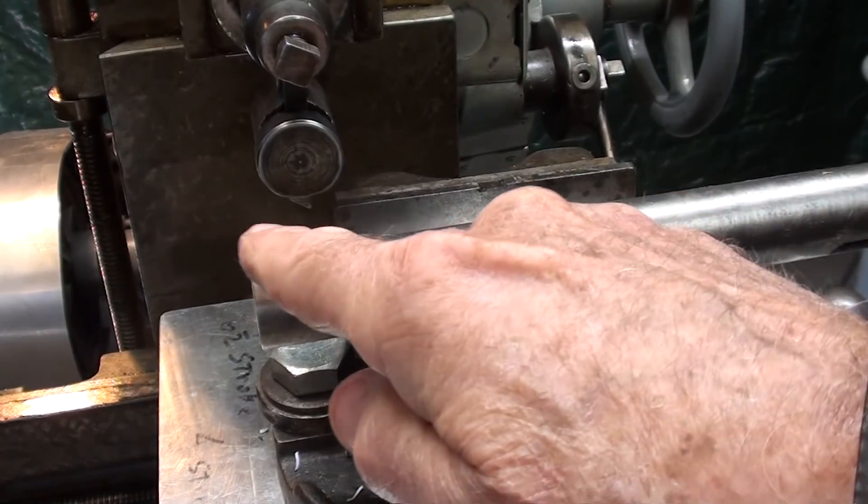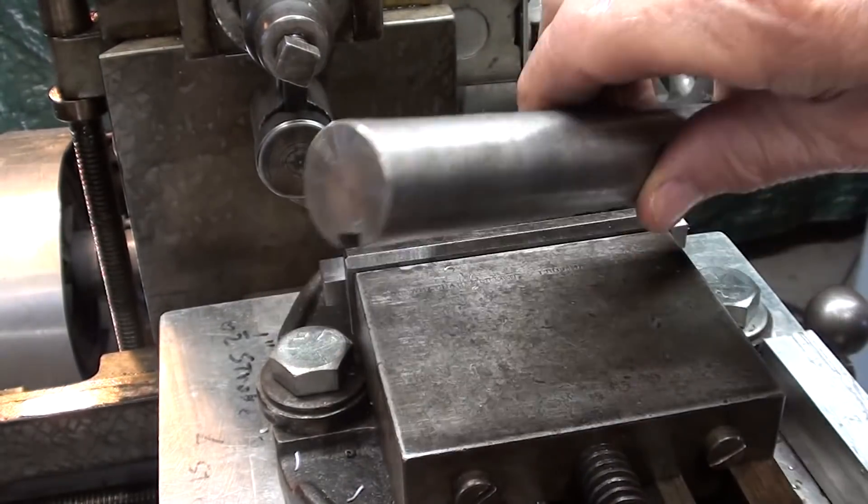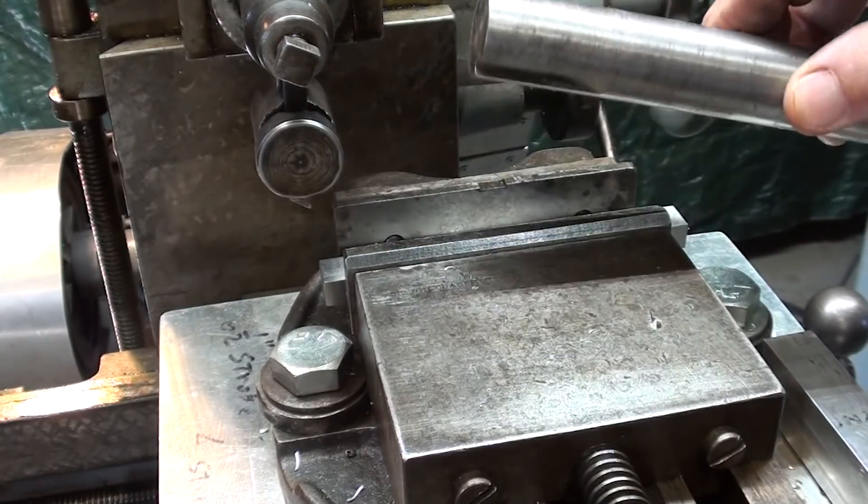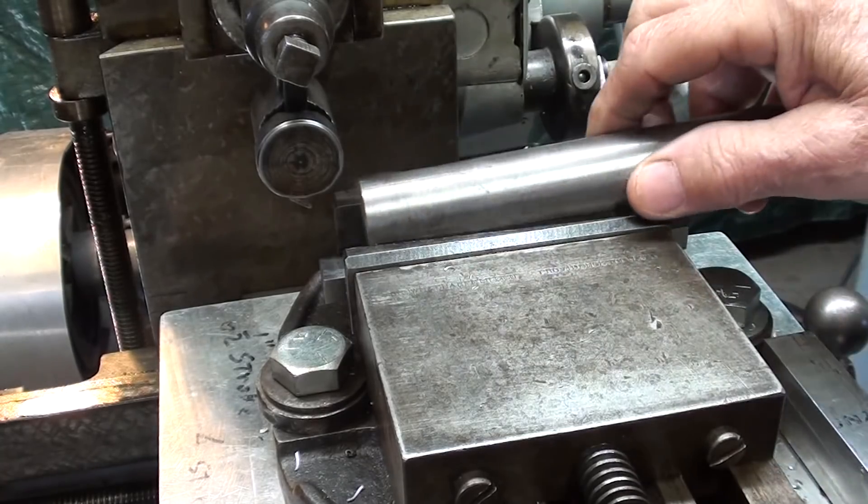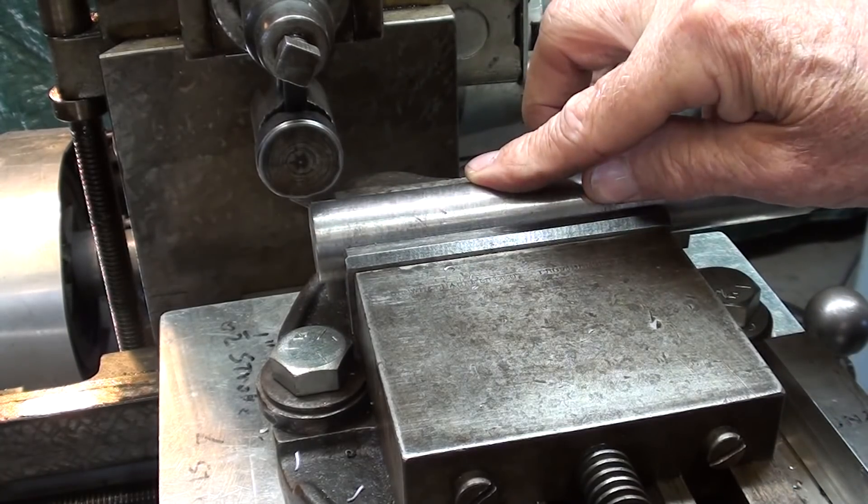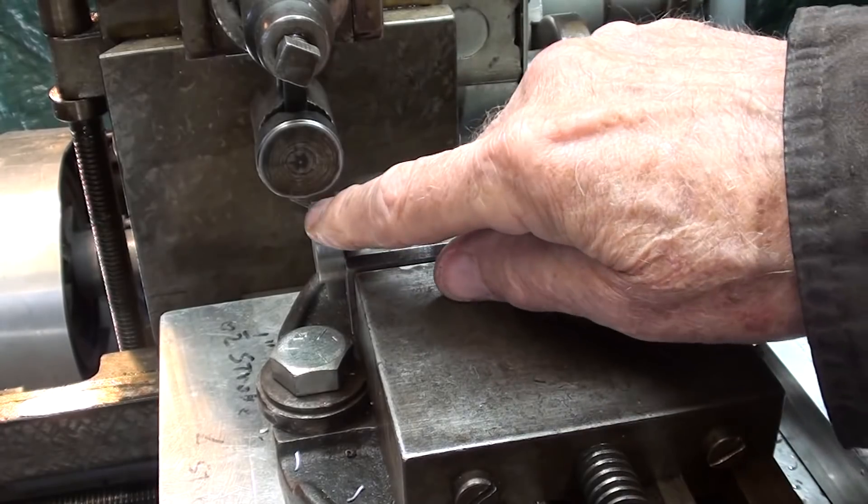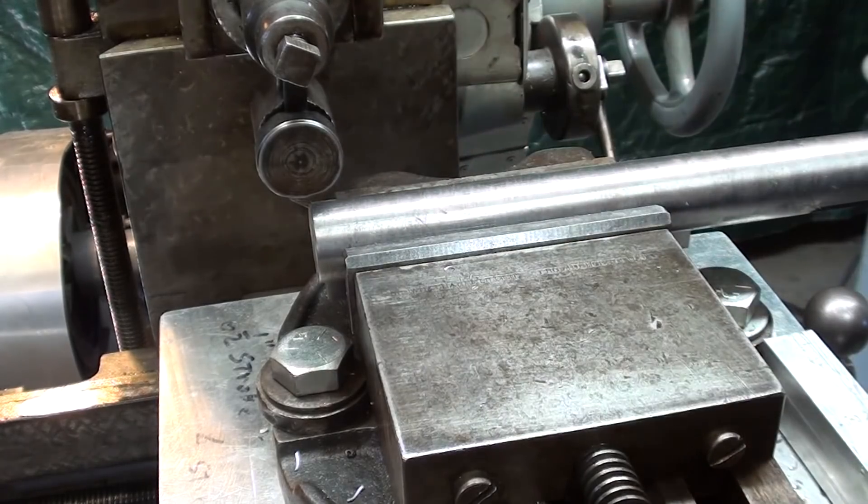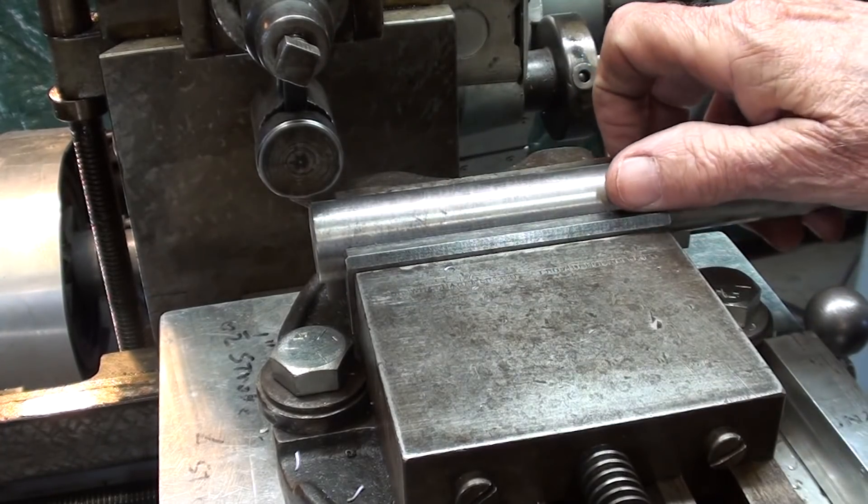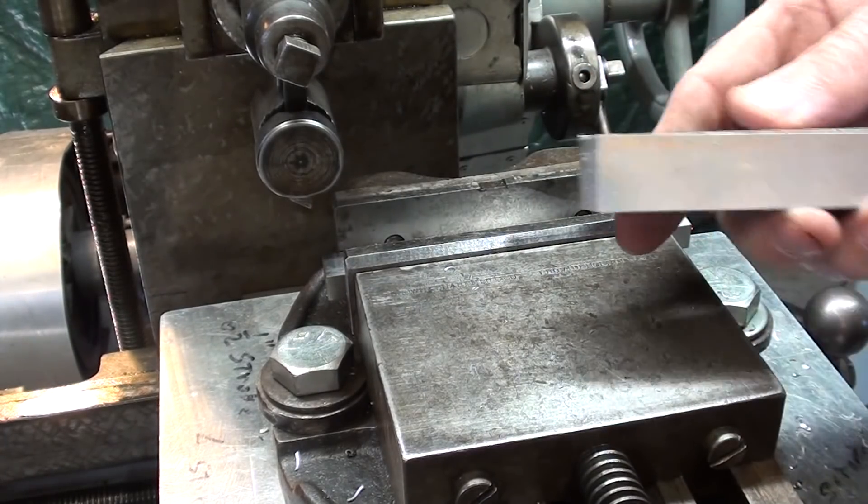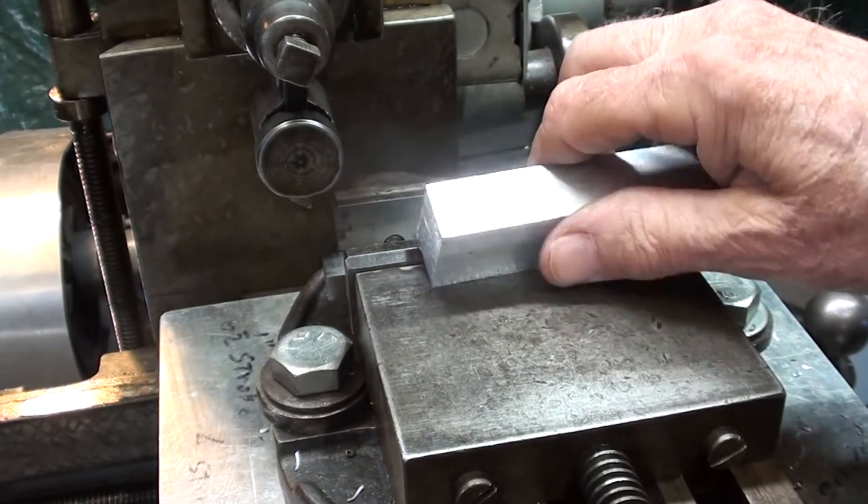You may wish to machine a flat on a shaft. That can be done just by placing the work in the vise on a parallel to raise it up. Tighten the vise and machine it to the length and depth required. Or it could be held in a V-block. I'm not going to do that because it's such a simple job, and it's not unlike just machining a flat.